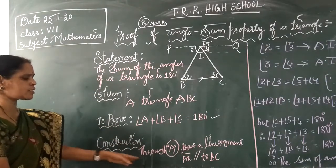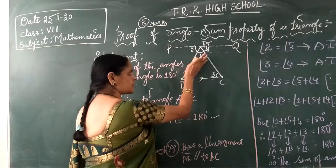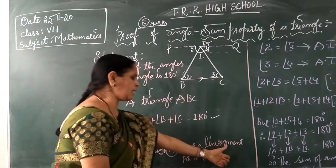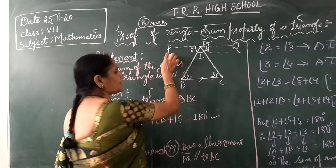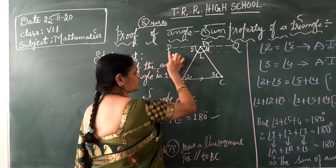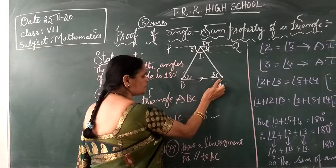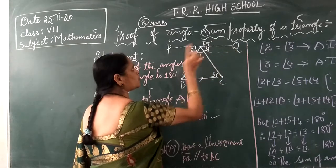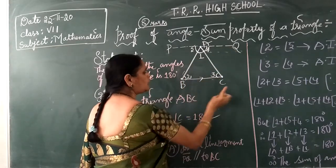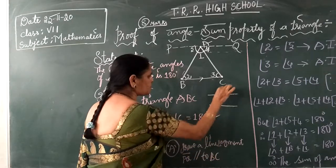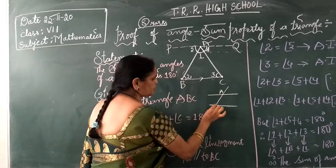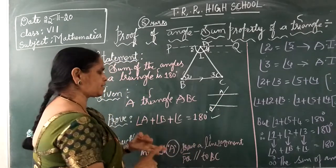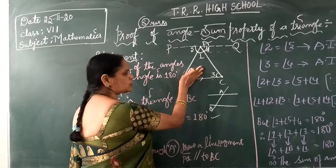How do we construct the step? This is triangle ABC. Through vertex A, draw a line segment PQ which is parallel to BC, and name it as PQ. So BC is a straight line, and we draw a line segment named PQ parallel to BC. When PQ is parallel to BC, you can see alternate angles and corresponding angles — that is why we do this construction. This is the transversal line.